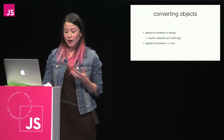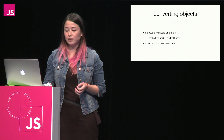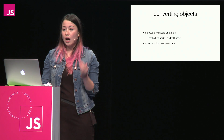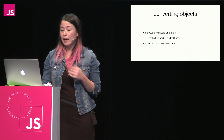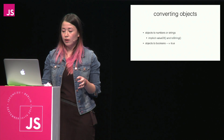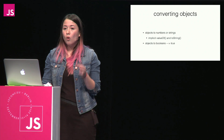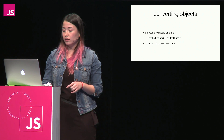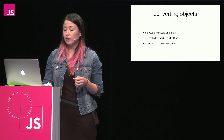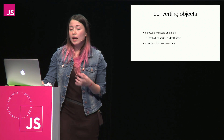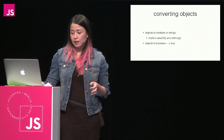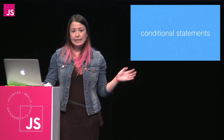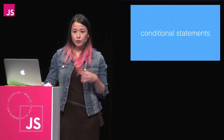And finally, what about objects? When converting objects to numbers or strings, JavaScript will try to convert the object to a primitive value by implicitly calling valueOf on the object. Or if valueOf isn't defined or didn't return a primitive type, it will try to call toString on the object instead. Converting objects to Booleans is a bit simpler — they're converted to true.